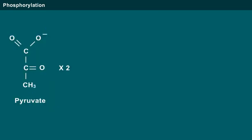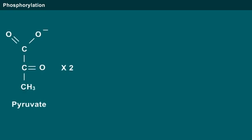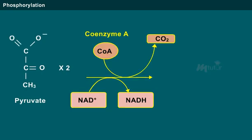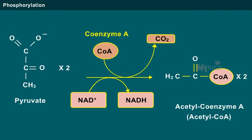Following glycolysis, the two pyruvate molecules are decarboxylated to form 2 acetyl-CoA molecules along with 2 NADH molecules.